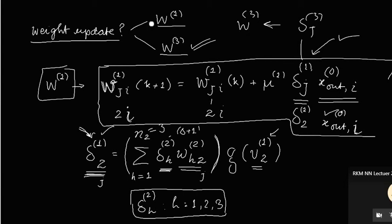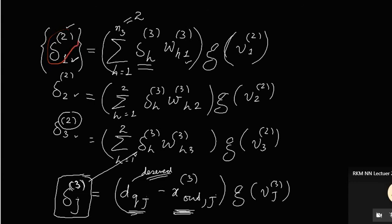In the previous lecture we have seen that if we want to evaluate delta superscript 1, then for this we need the values of delta superscript 2, meaning local error at layer 2. And to evaluate delta 2 we need to know local error at delta 3. We can see that the error is going to propagate backward. First we need to calculate error at layer 3 and then only we can calculate error at layer 2. In this way this error is propagating backward and that is why the algorithm has been named as error backpropagation.